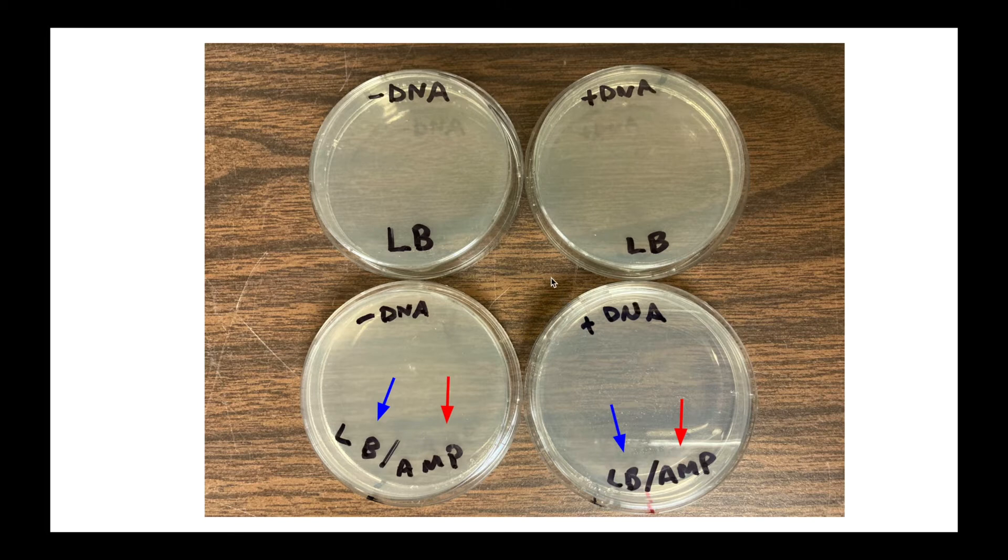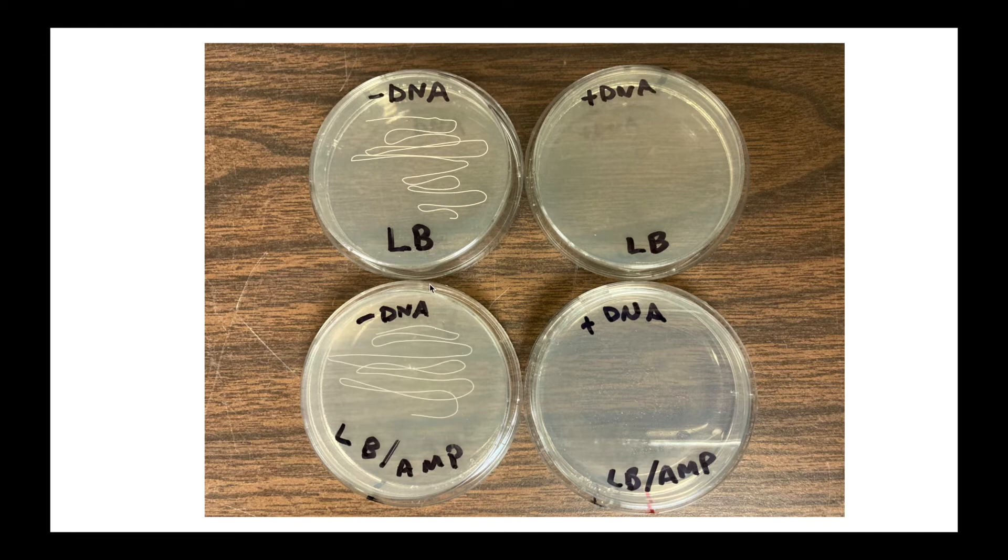So when we plate our bacteria, we do it on top of the agar. And you can see on this LB agar plate, it's labeled minus DNA. That means that this bacteria did not get any plasmid DNA. We use the same bacteria to put on this plate. It's minus DNA, that means this bacteria did not get the plasmid DNA. Now when you plate your bacteria, you're not going to see anything at first. It's actually going to still look a lot like this. But if you come back in a day, you can check to see whether or not your bacteria grew.